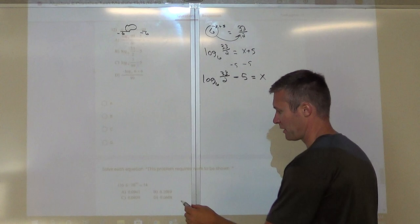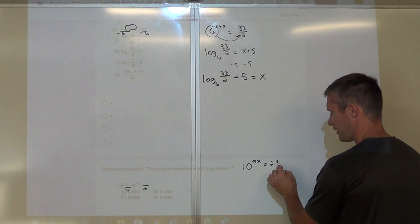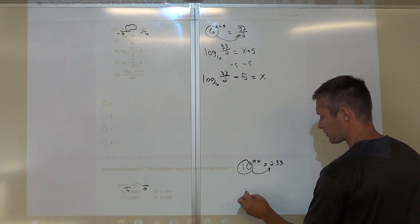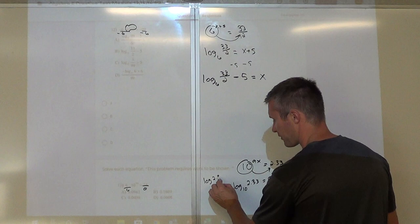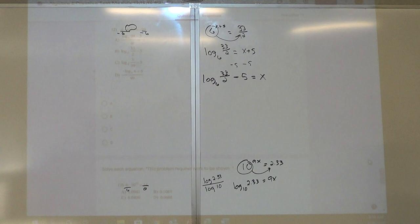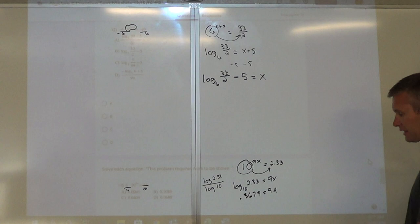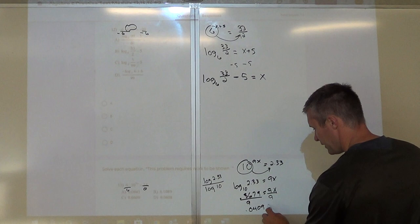For number 13, divide by 6: 9x equals 10/6, which is approximately 2.333 repeating. Write in log form: log base 10 of 2.33 equals 9x. On the calculator, log(2.33) divided by log(10) equals approximately 0.3679. Divide by 9 and we get approximately 0.0409 equals x. So the answer is C.